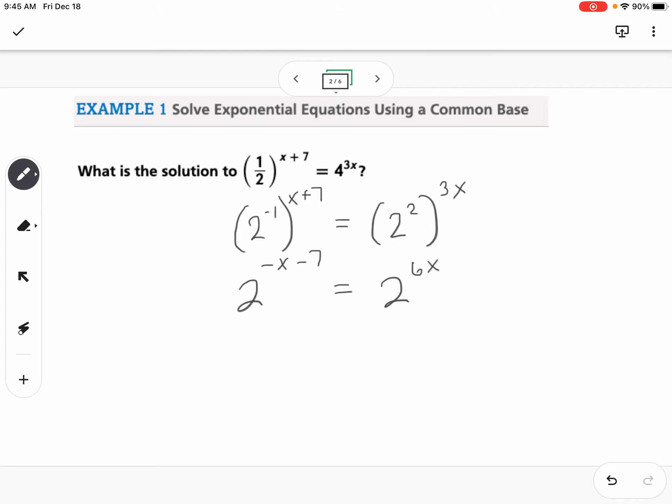Now because we have the same base, the exponents have to be equivalent to each other. So negative x minus 7 equals 6x. I'm going to add x to both sides, so we get x equals negative 1.